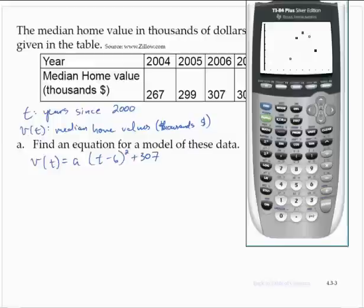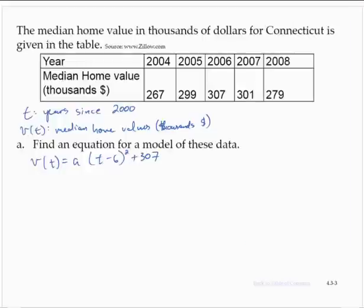Now we need to find another point to go through. I'm just going to go ahead and use the point, this point here, 5, 299. So I'm going to use 5, 299 to solve for a.